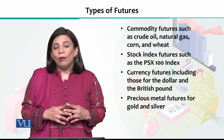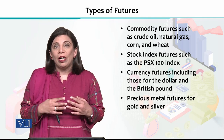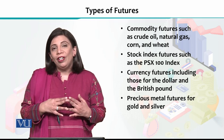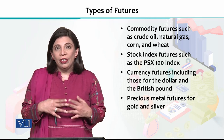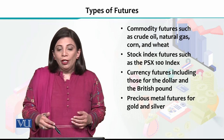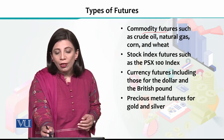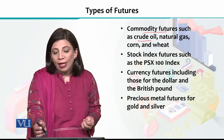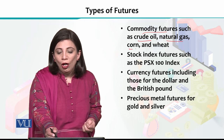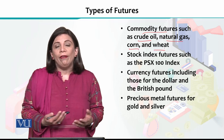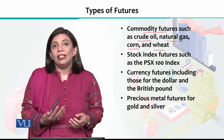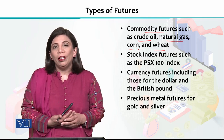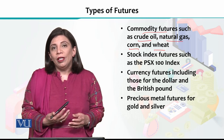It is important to understand the various types of futures one can go for as an investor. Altogether there are four different types of futures that financial markets offer. The first one is commodity futures — you can buy futures on crude oil, natural gas, corn, wheat, and many other commodities such as gold, silver, and other precious metals.